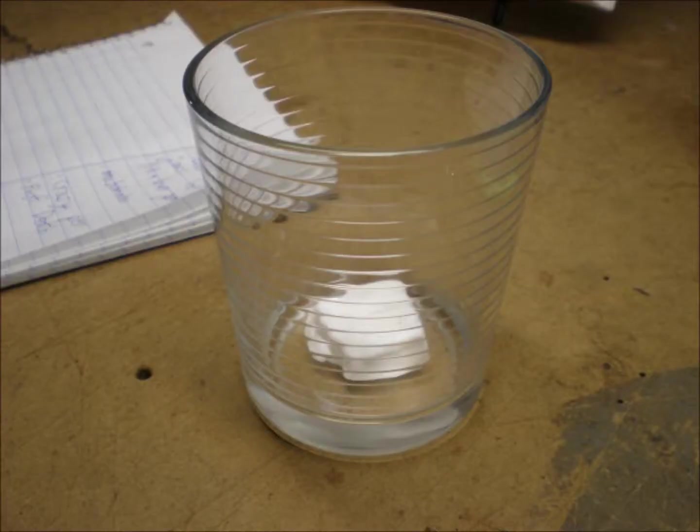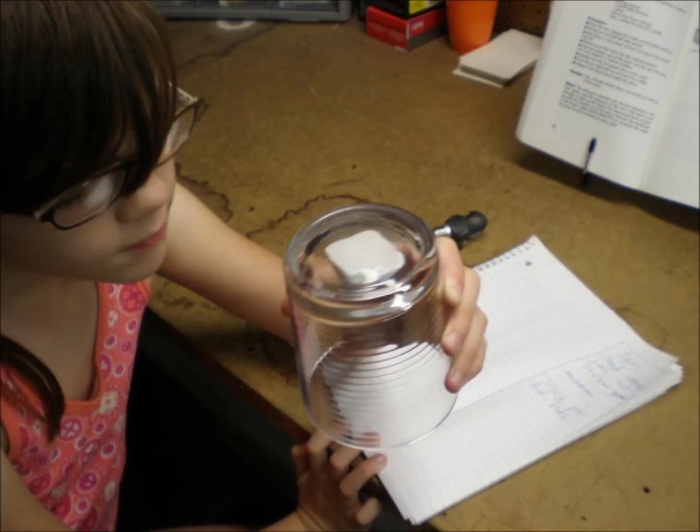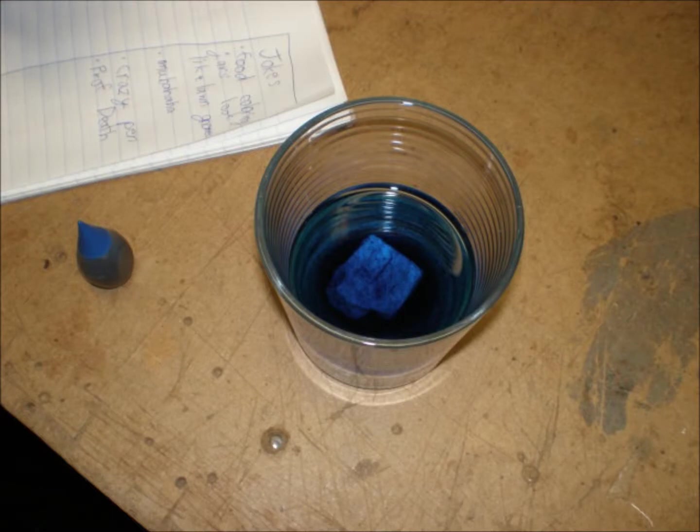We took some of the modeling clay and pushed it into the bottom of one of the cups so it stuck. It really did stick! Then we poured some alcohol into the glass so it was a little under half full. Then we put food coloring into the alcohol so you could see it better in the straw.